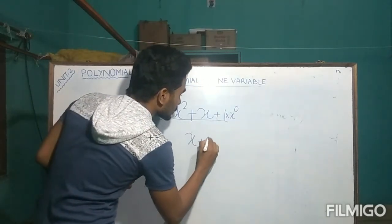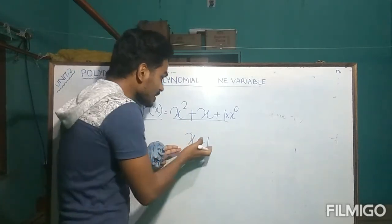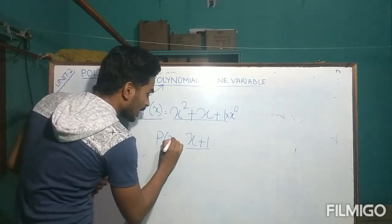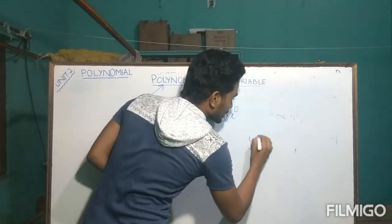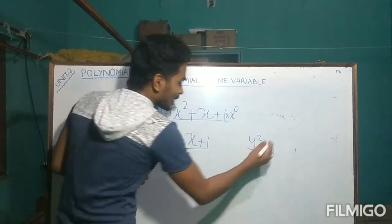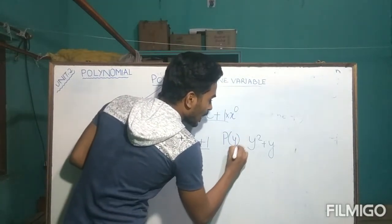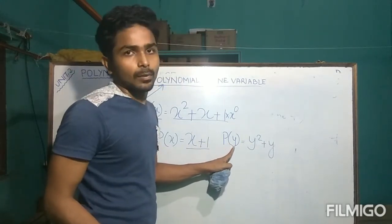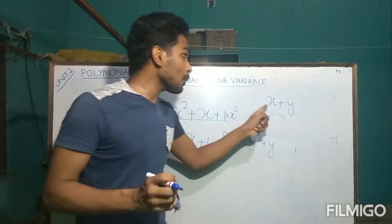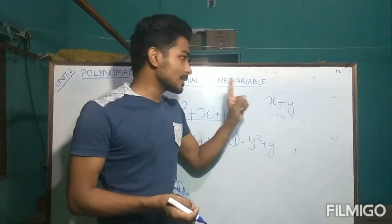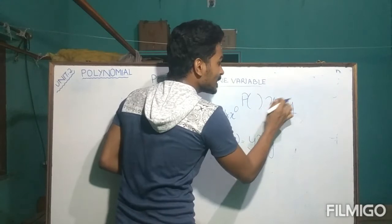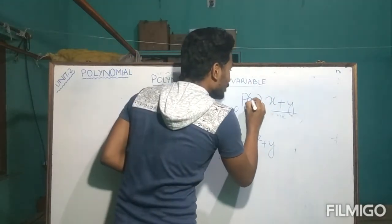Suppose we have X + 1 — it is also a polynomial expressed in X, so we write P(X). If we have Y² + Y, it is a polynomial in Y, so we write P(Y). If a polynomial is in the form X + Y, it is a polynomial in two variables, and in such cases we write it as P(X, Y).